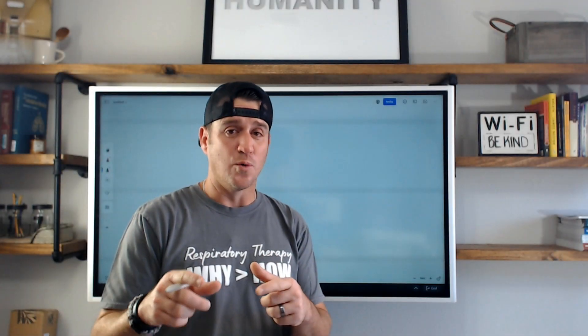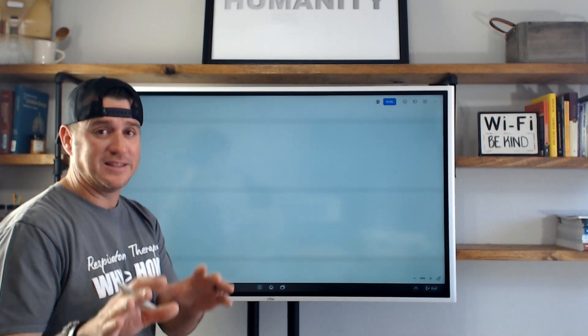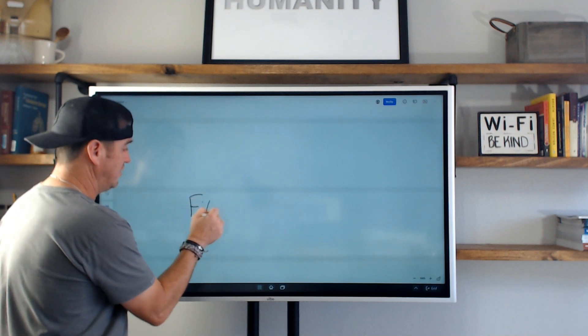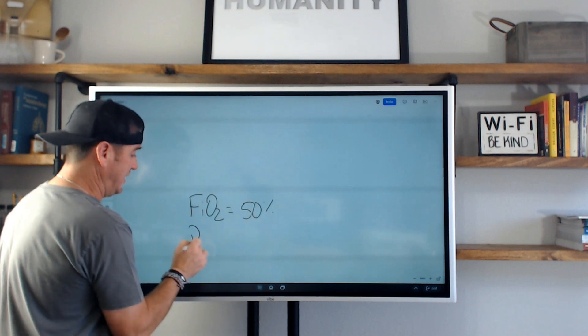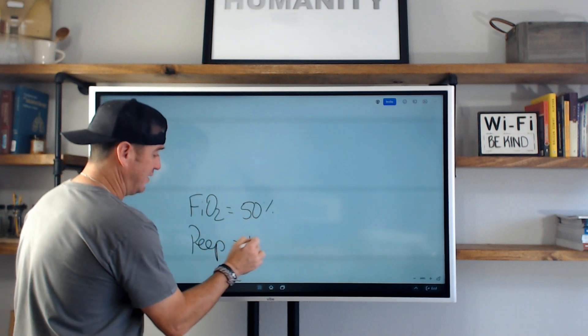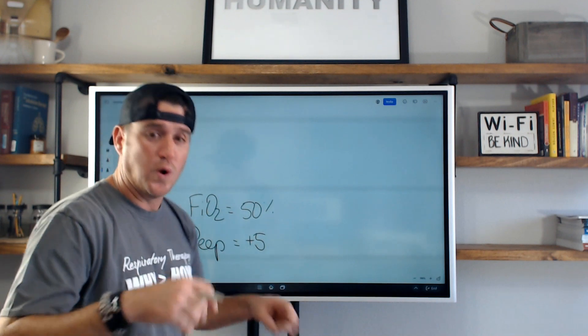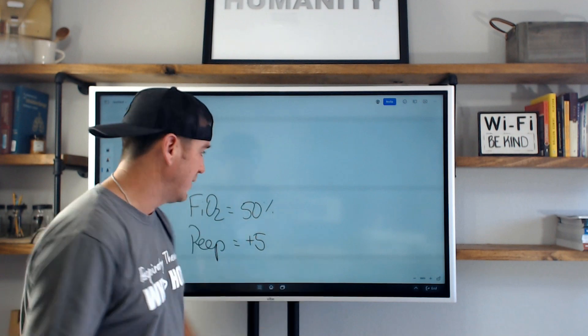So like I said, we're on a PEEP 5 and an FiO2 of 50%. So I'm going to lay this information out for you. We have an FiO2 equals 50%, they're on a PEEP 5, they're on volume control. Nothing else matters. The other settings don't matter in this situation. I promise you just go with it.